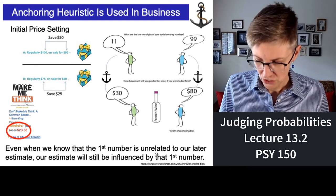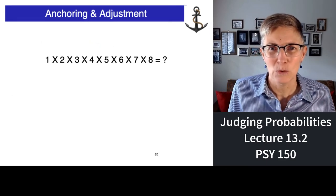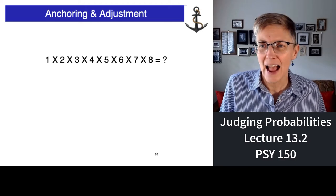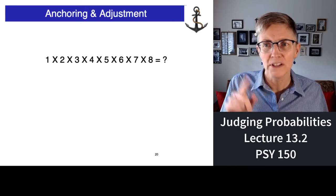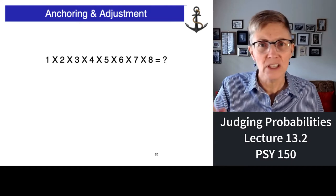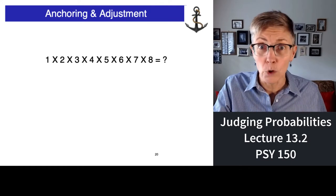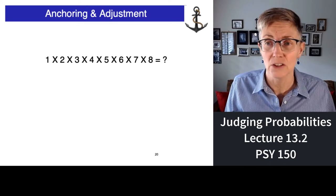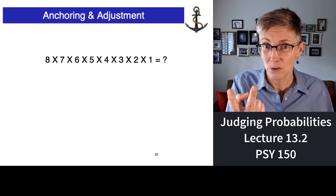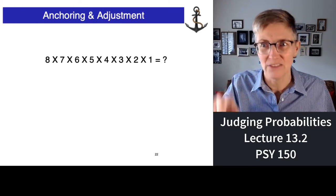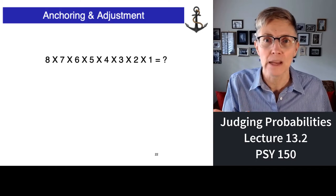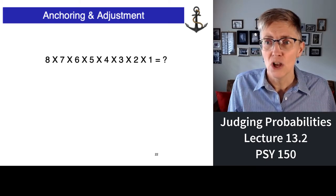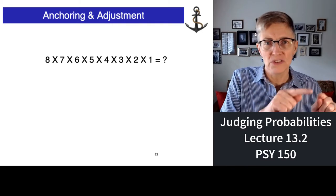I'm going to give you a demonstration of what happens when I give folks an anchoring effect experiment in class. I have half the room see this equation: 1 times 2 times 3 times 4 times 5. I show it very quickly and ask them to give their best guess at the solution — do not work it out, just gut instinct. Then I have those students close their eyes and the other half of the class looks up. They see the same equation but flipped backwards — now it's 8 times 7 times 6 times 5 times 4 — and I give them the same instructions.